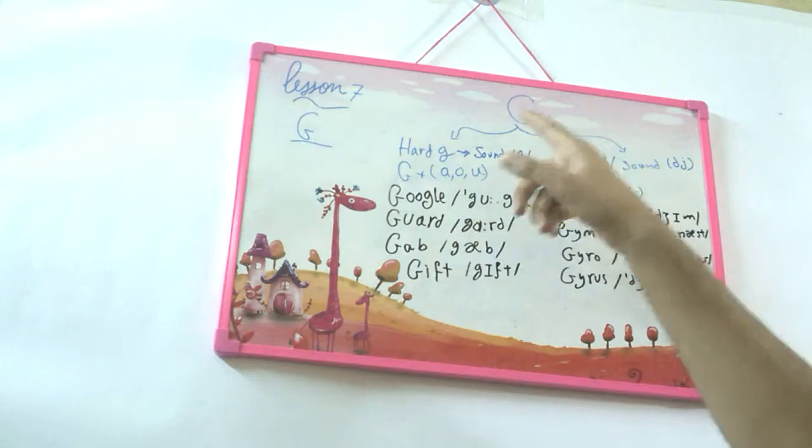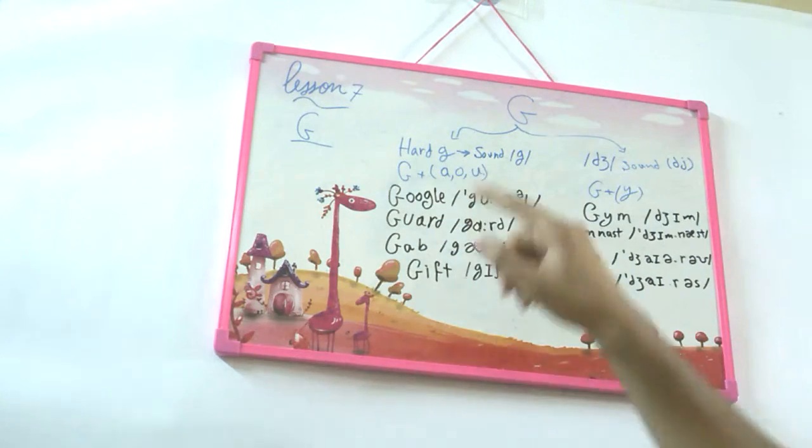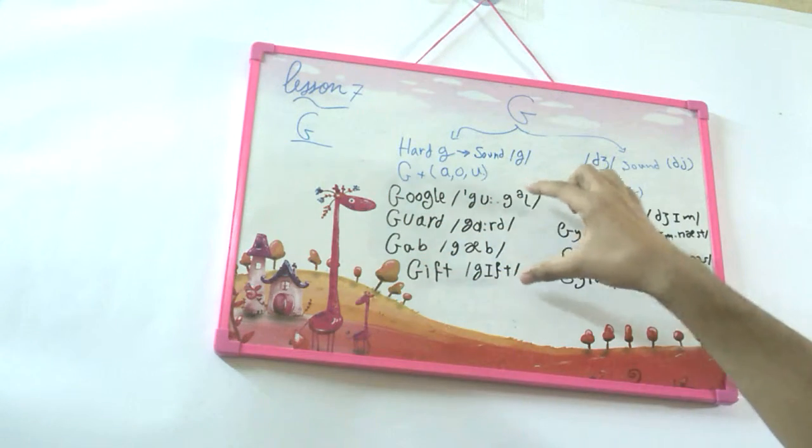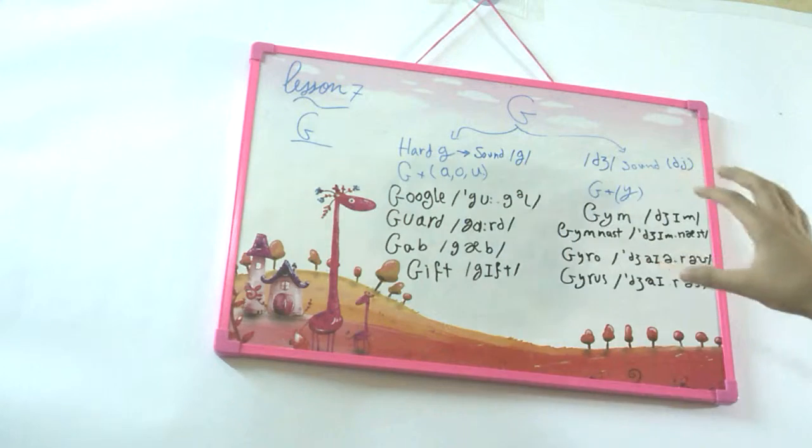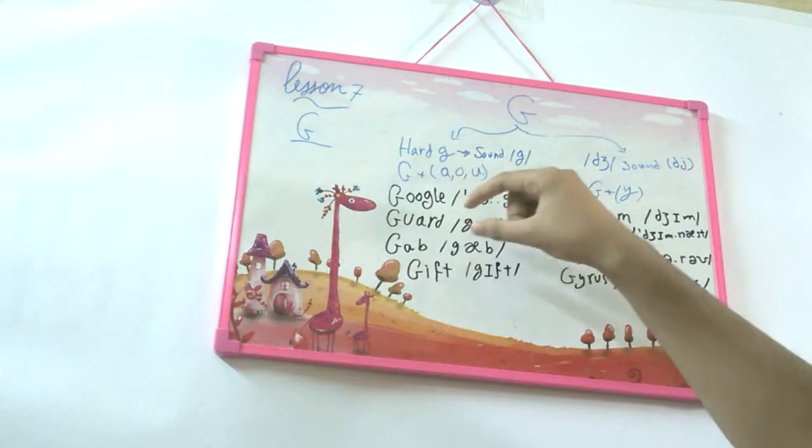Either it's hard G, like Google, guard, gap, and gift. And this is the phonetics you might see in the dictionaries. Gift is a different word that does not follow that rule, but it's still pronounced as good.